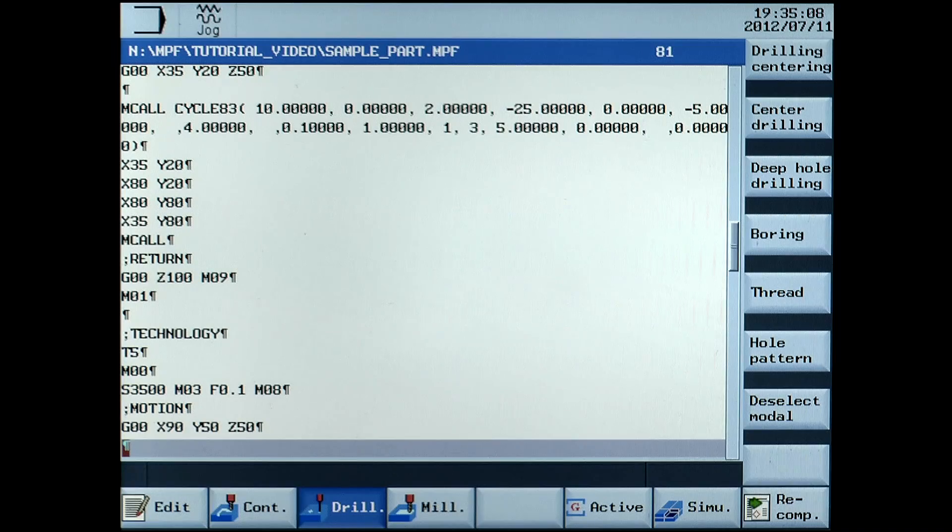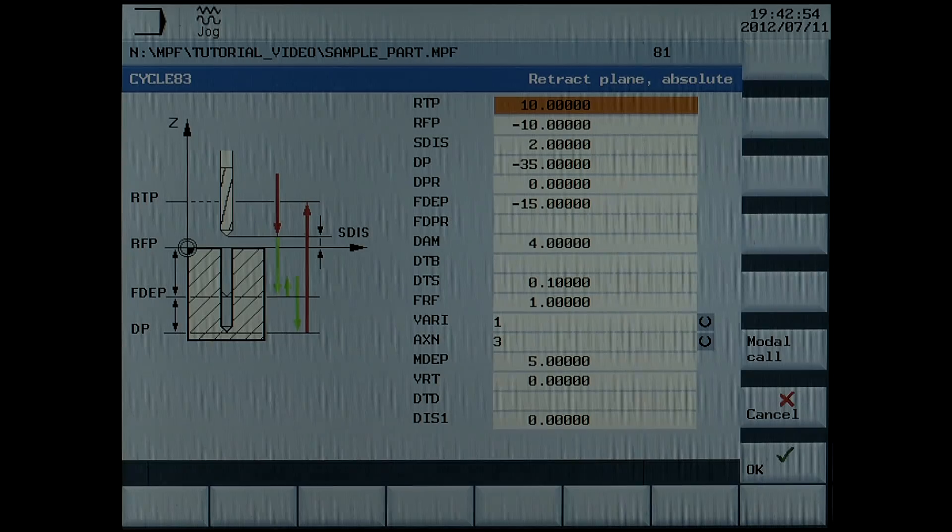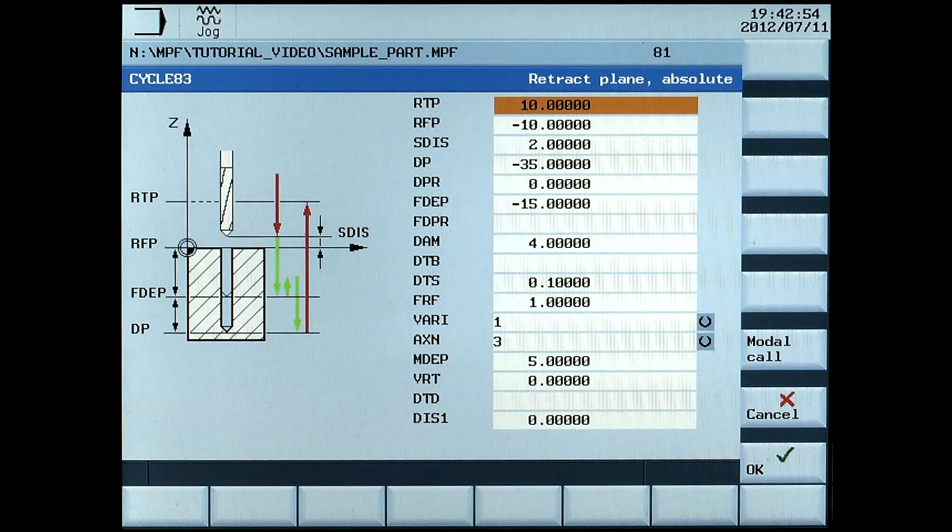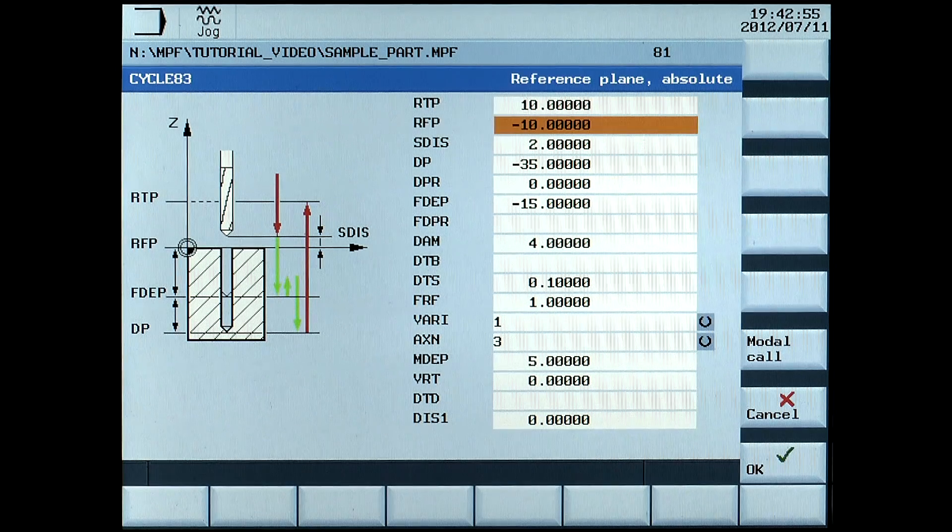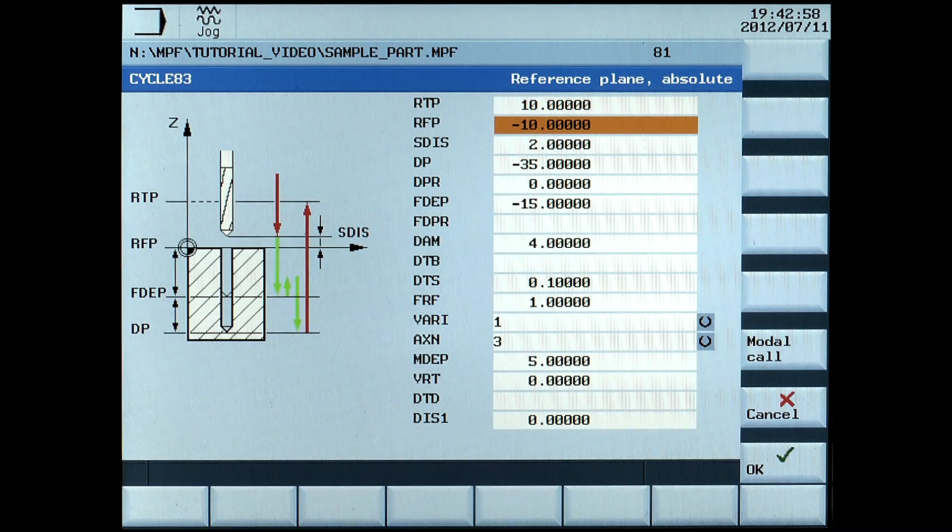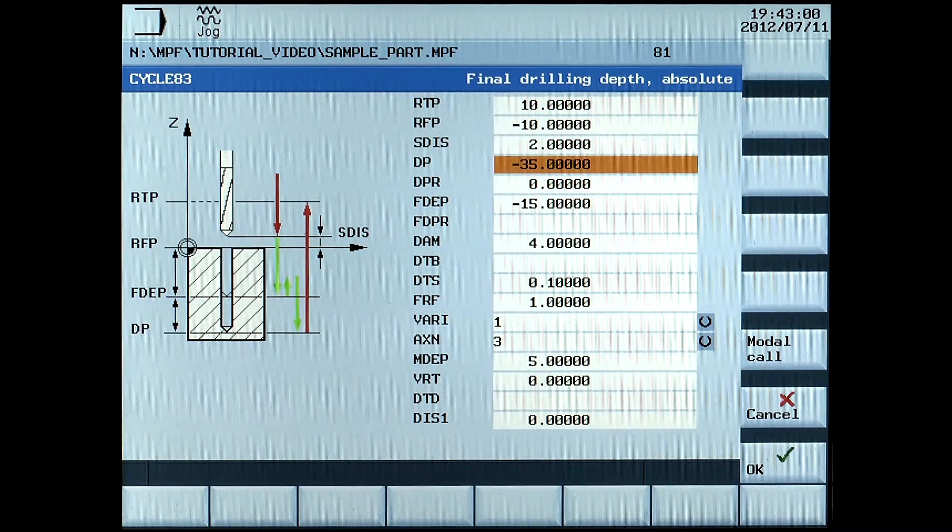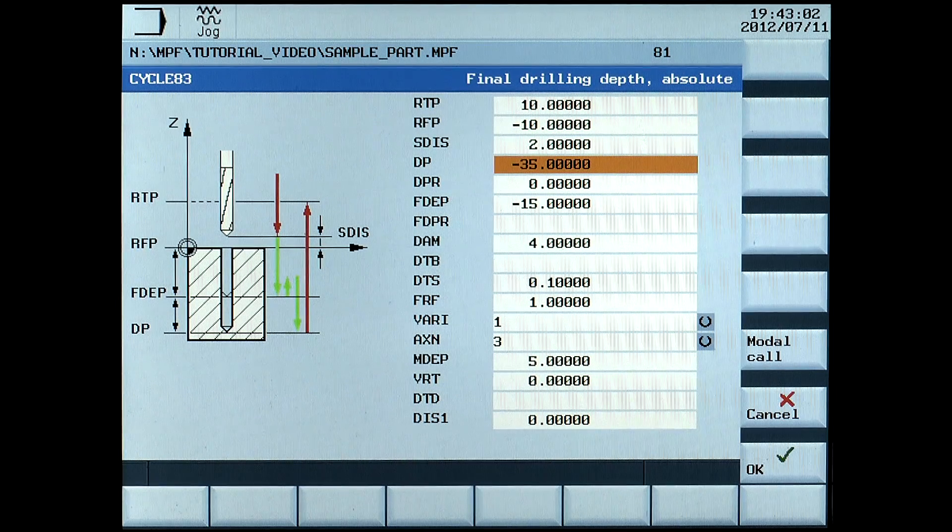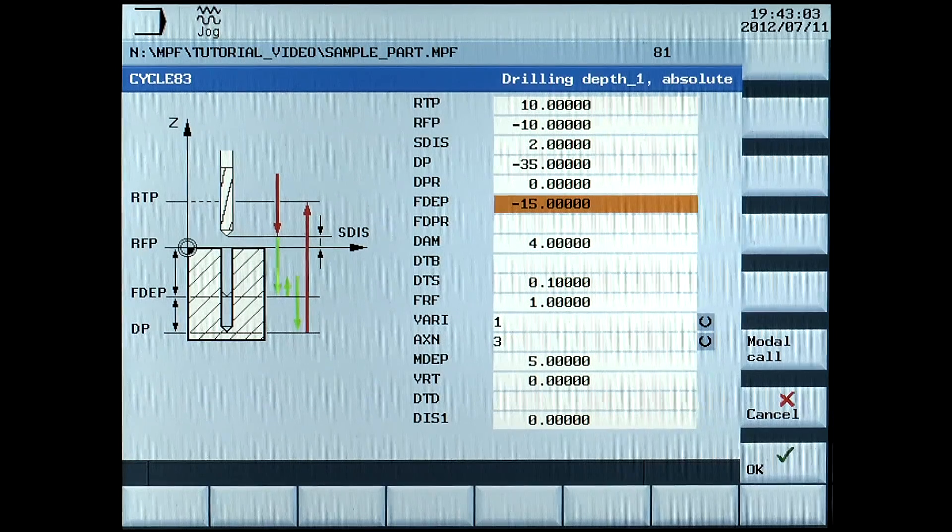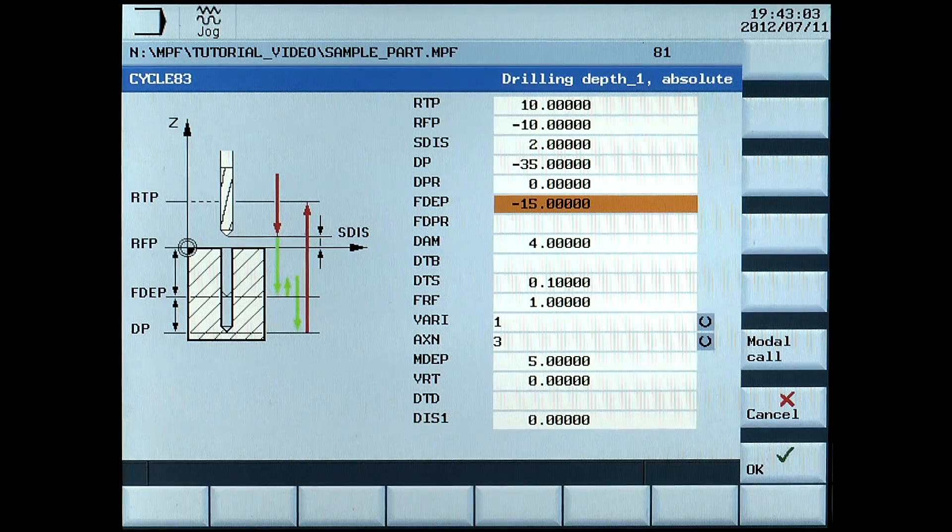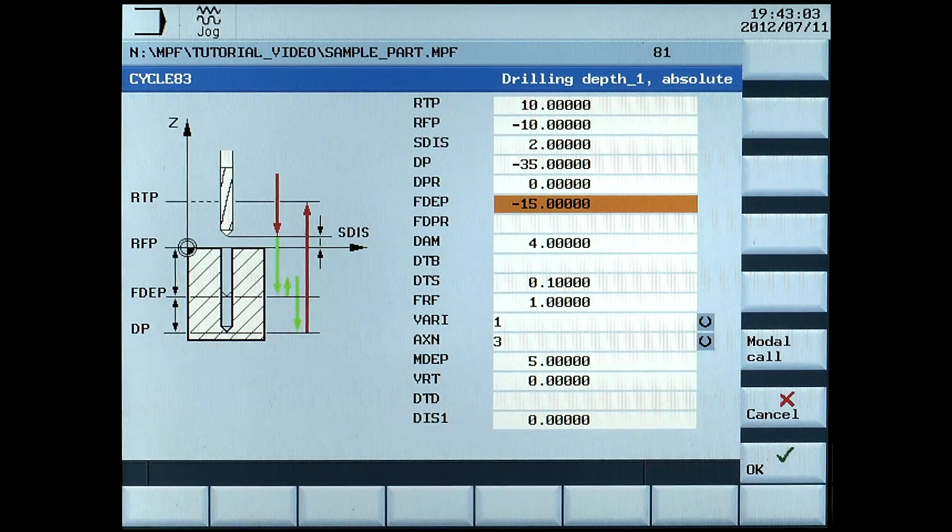Call the cycle 83. The technology data is the same as in the drilling before, except RFP, reference plane absolute. DP, final drilling depth absolute. FDEP, drilling depth absolute.